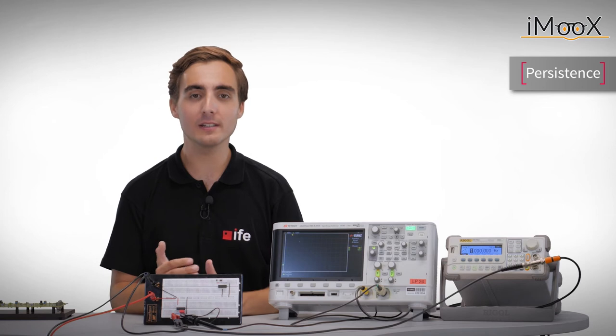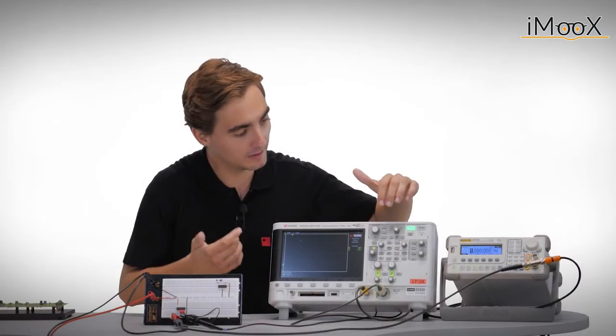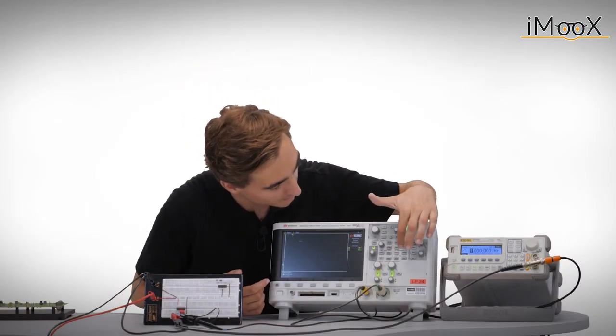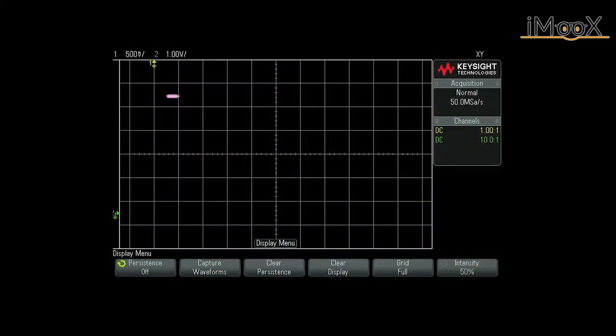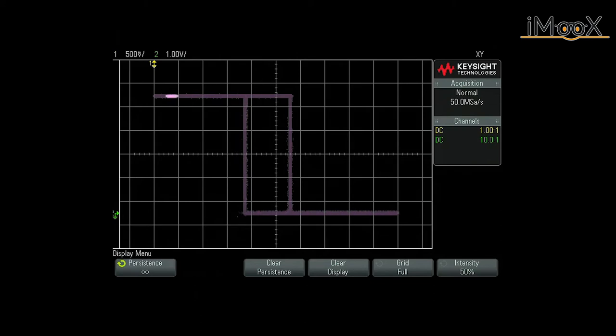By doing so, we only see a single dot that is moving over the screen. But we can highlight its trace by setting the scope screen's persistence to an appropriate time. This is done by pressing the display button and turning the persistence on. Now we can see both the hysteresis curve and its direction. The persistence itself was first a feature of analog scopes that has been adapted to most digital scopes by software.